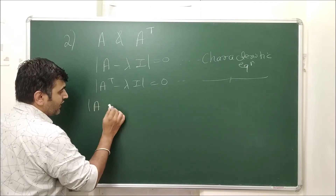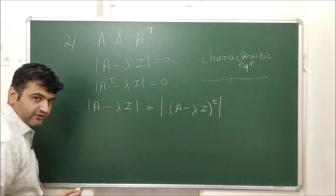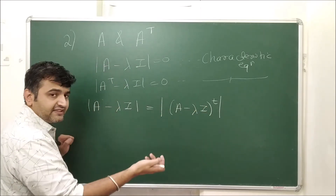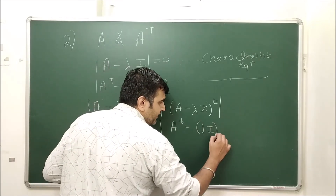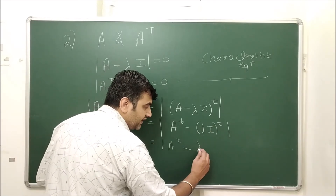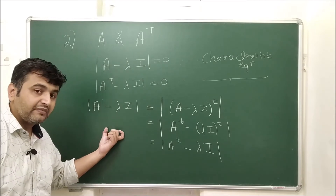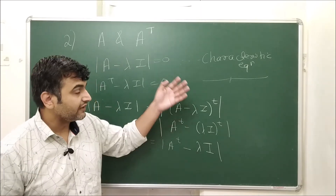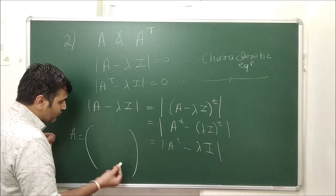We know det(A − λI) = det((A − λI) transpose), since a matrix and its transpose always have the same determinant. Now (A − λI) transpose = A transpose − λI transpose = A transpose − λI, since λ is a scalar and I transpose = I. Therefore det(A − λI) = det(A transpose − λI), confirming they share the same characteristic polynomial and thus the same eigenvalues.